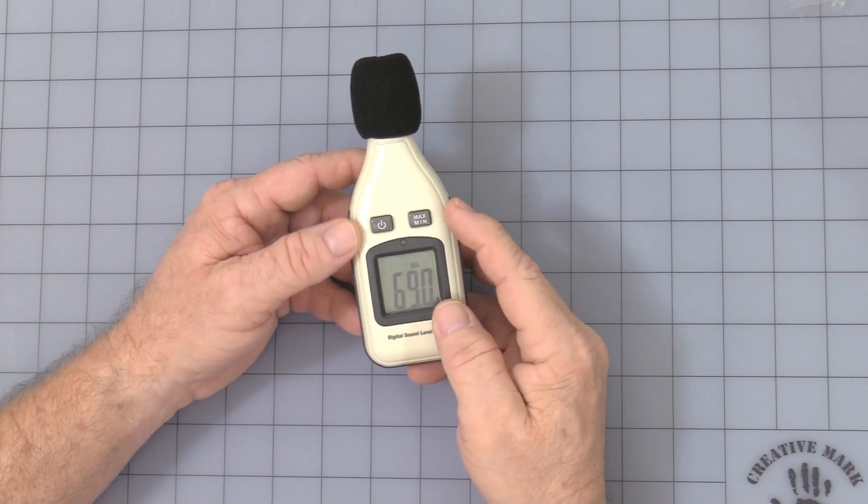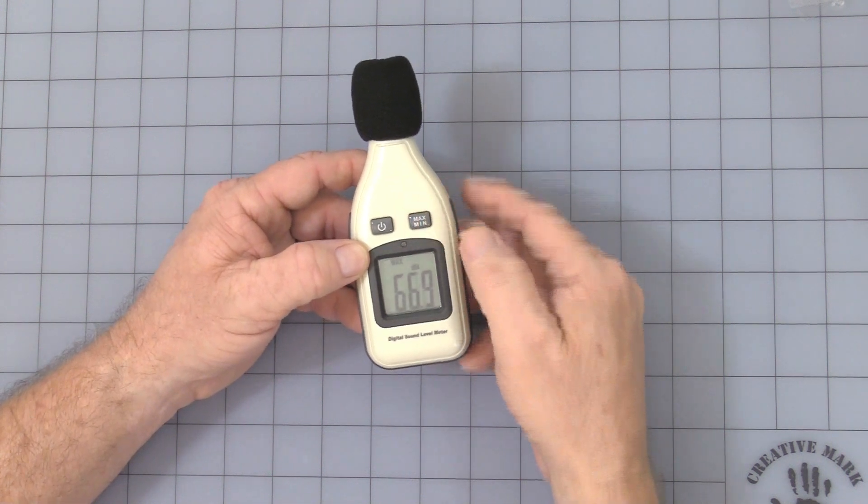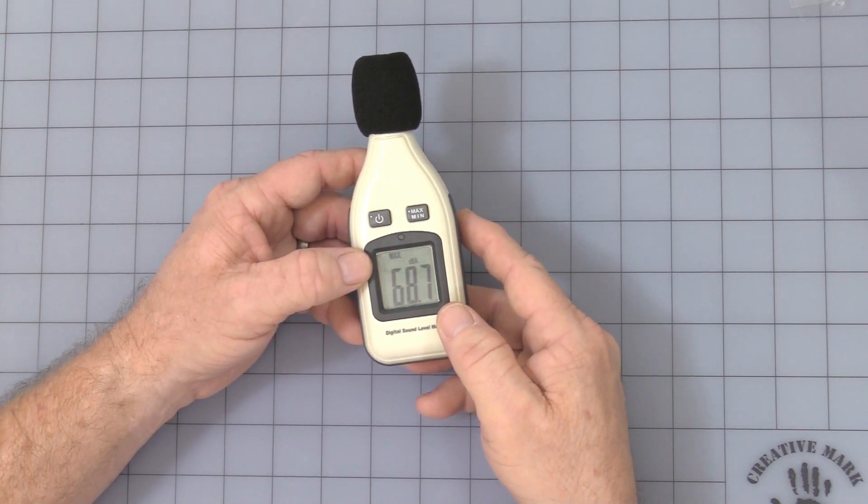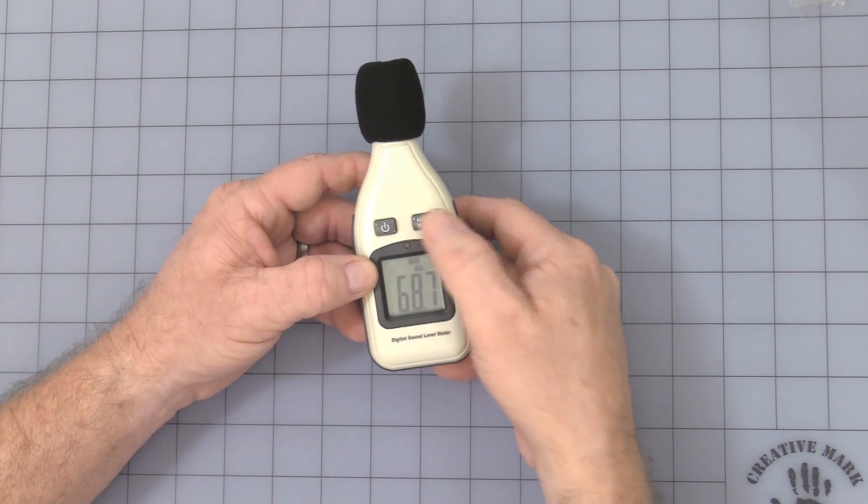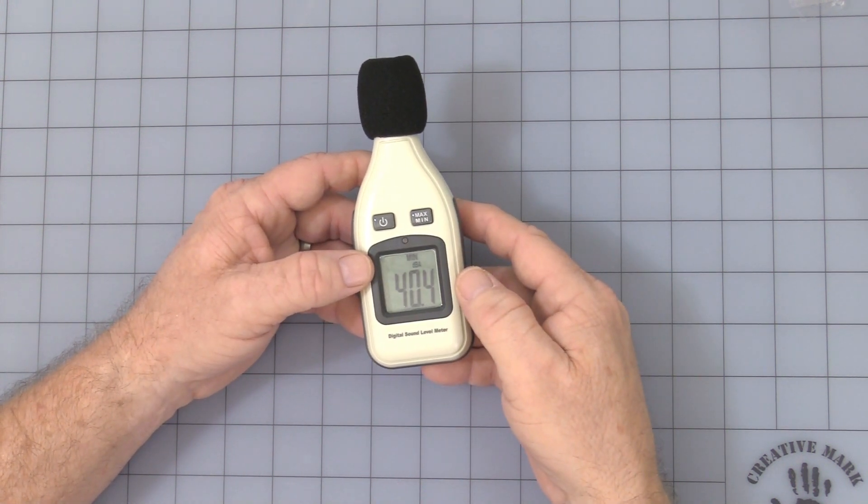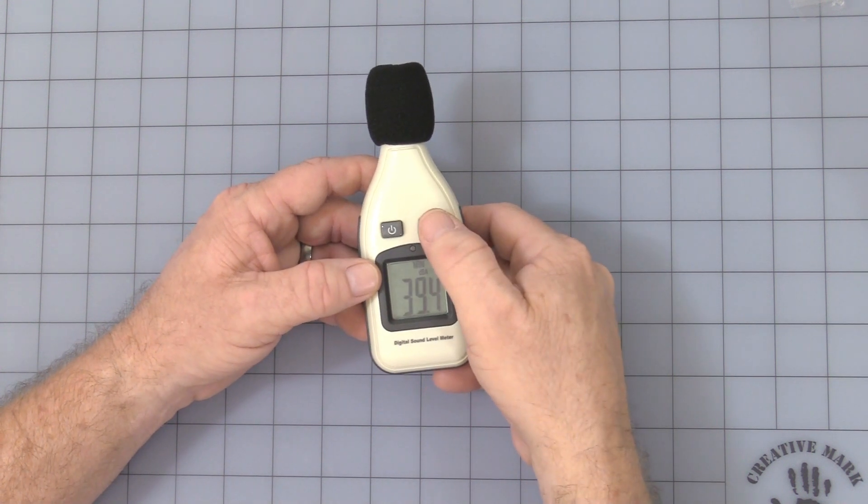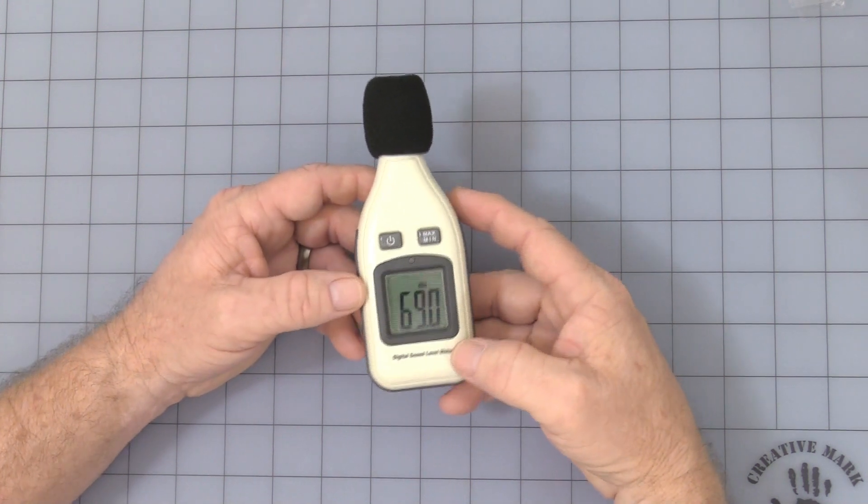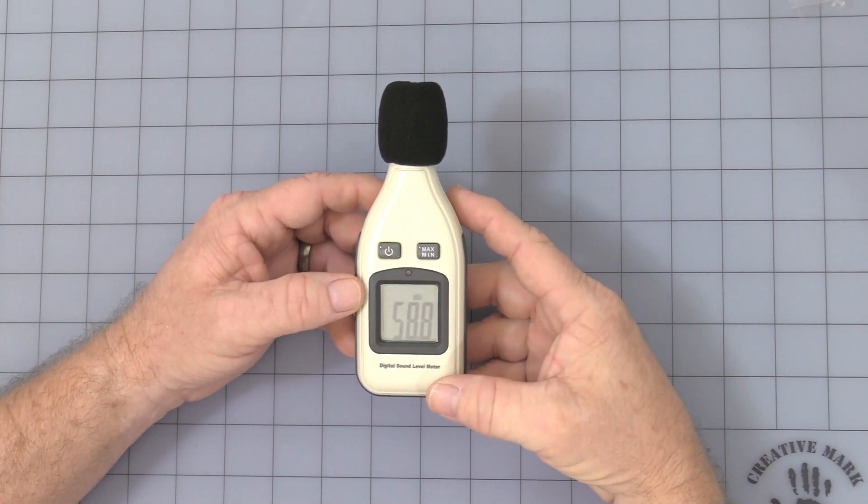Next button that you have is a minimum and maximum. I press it once, it displays the max reading. Press it again, shows you the minimum reading. Then press it a third time, it goes back to the actual measurement at the time.